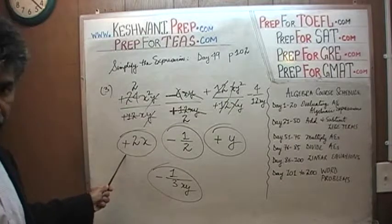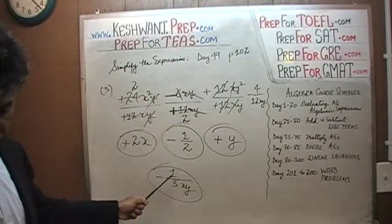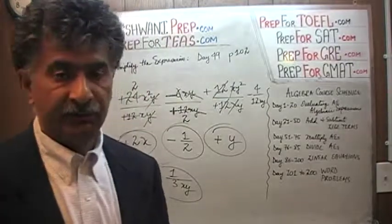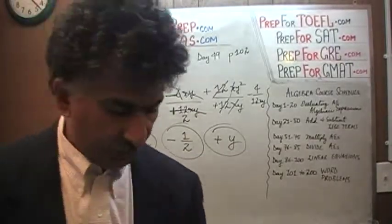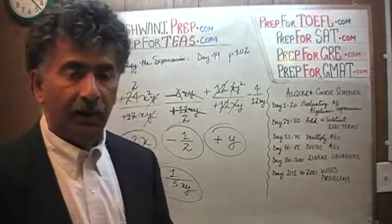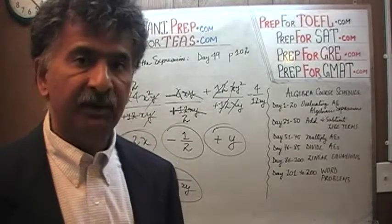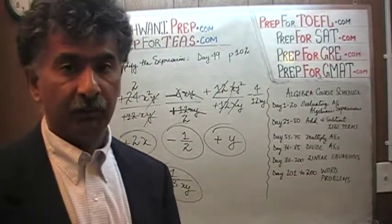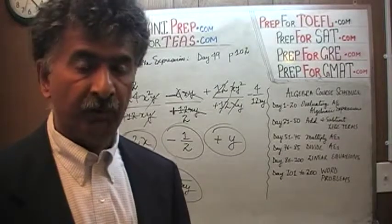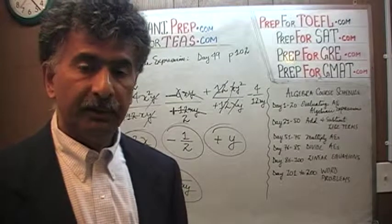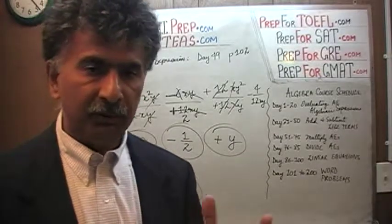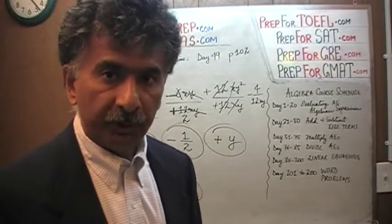So our complete answer is positive 2x minus one-half plus y minus 1 over 3xy. Tomorrow we'll deal with simple word problems, where they give us something in plain English and we have to translate it into an algebraic expression — that's what we cover in day 101 through 200. People have a great deal of fear of word problems because they never acquired a sound foundation. These 100 videos will provide that foundation so you lose your fear forever. I'll see you tomorrow — okay, bye now.